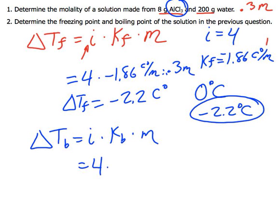Kb for water, I look up, is 0.51 Celsius degrees per molal. And the concentration is going to be 0.3. So I do 4 times 0.51 times 0.3. And I'm going to get about 0.61 Celsius degrees.